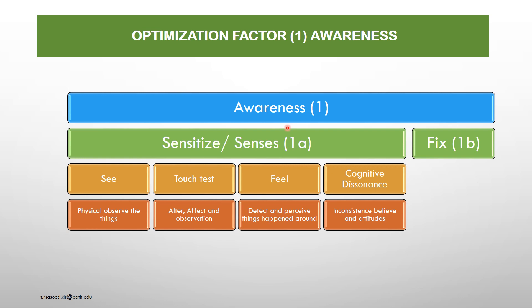In awareness, further constituted into two sections: sensitized and fixed. The sensitized section comprises four methods: physical — observe things to see, touch, and affect; see, feel, detect, and perceive things happening around; cognitive resonance; and inconsistent belief and attitude. These four methods can sensitize different technical issues — how to address them, what the objective is, and how to fix them on merit.